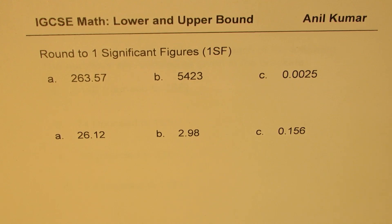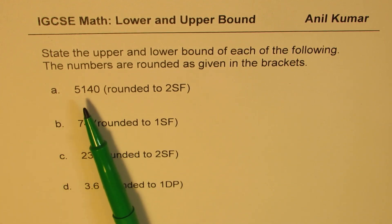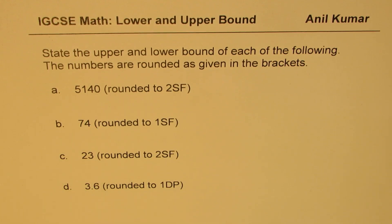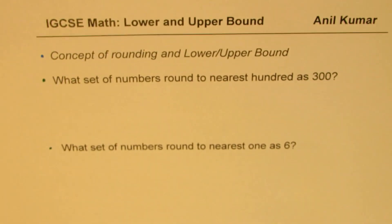Then we'll talk about one significant figure. Once you understand rounding to two significant figures, one significant figure is not difficult — it's a similar thing. After that, we'll take a practice exercise working with rounded figures and try to figure out the upper bound and lower bound for each number given. After this video, we'll see in the next video how in calculations we could have minimum or maximum values from the lower and upper bound, and that's where it gets slightly more difficult and interesting.